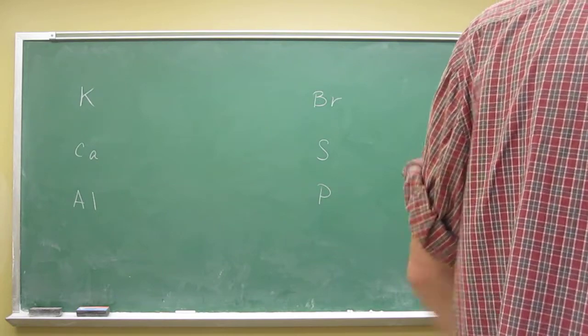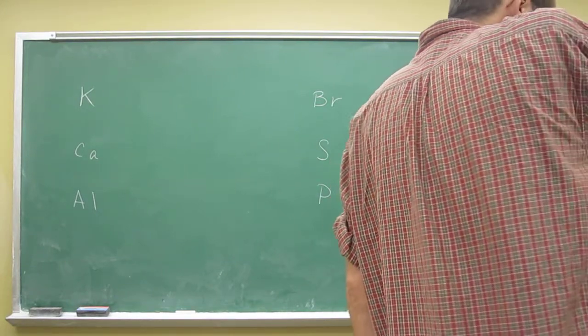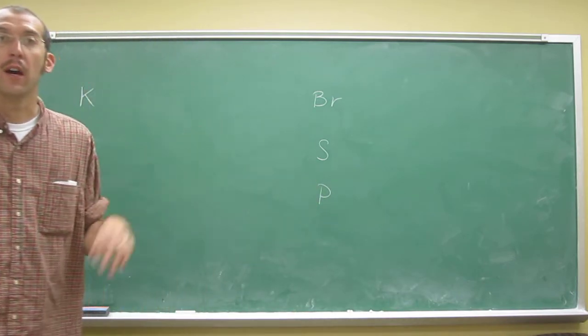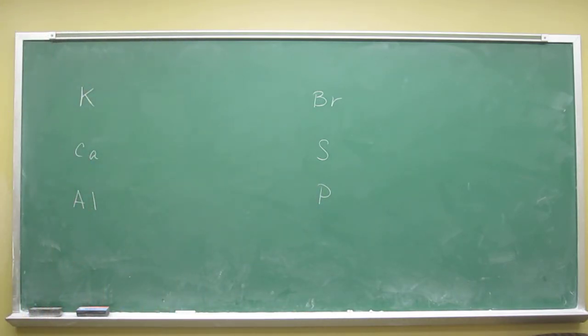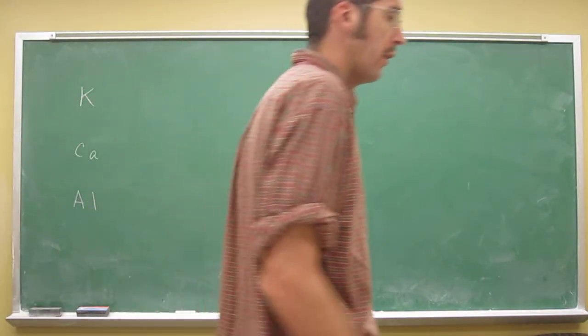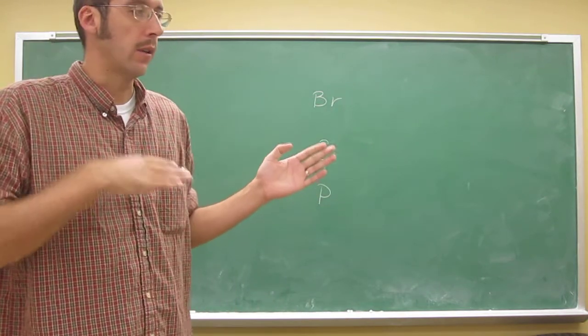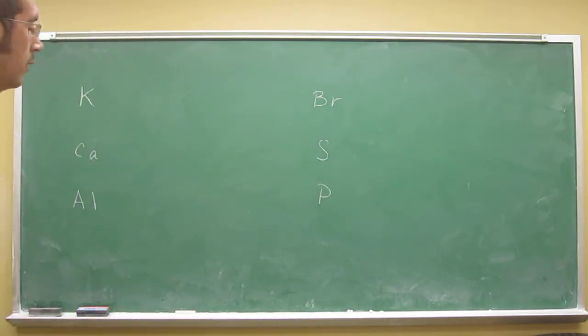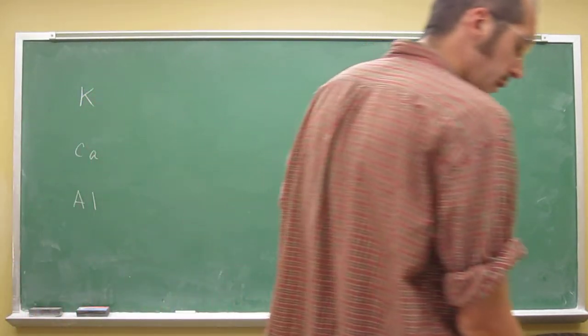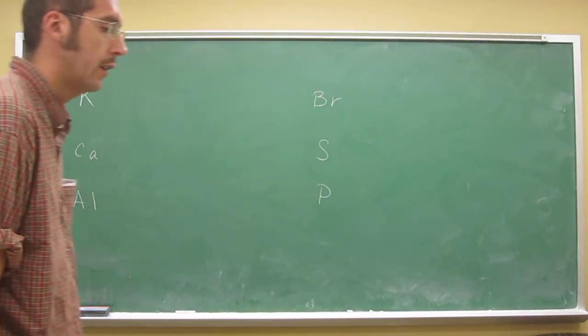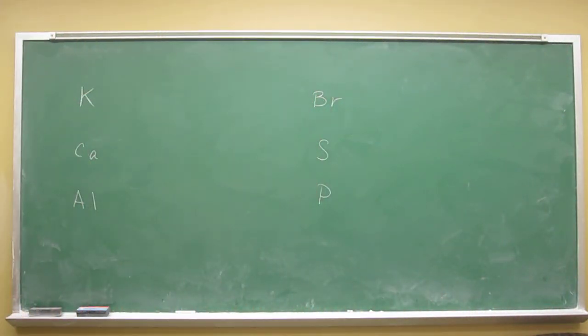This one just follows those rules that we just talked about, about atoms wanting to obey the Octet Rule. So remember that wherever you are on the periodic table, it kind of determines whether you want to go backwards or forwards in gaining or losing electrons. All you've got to do is just look at the periodic table as your cheat sheet here, and it'll tell you what the most probable charge is.